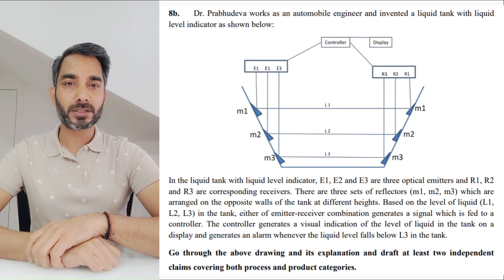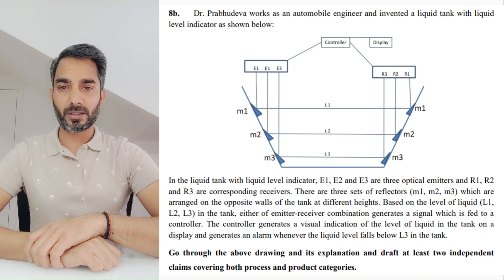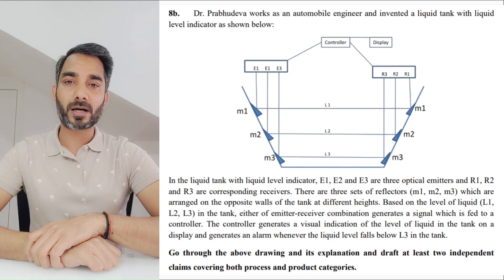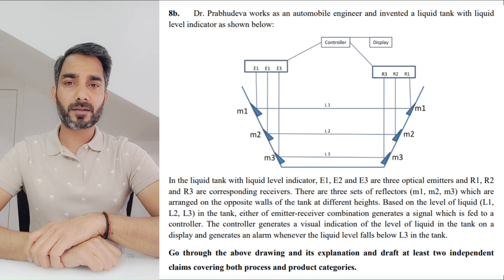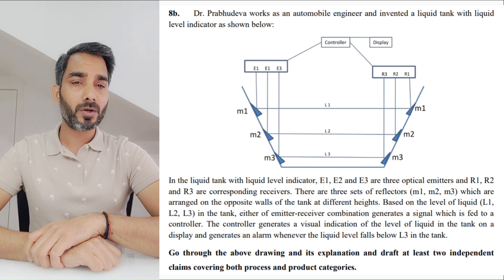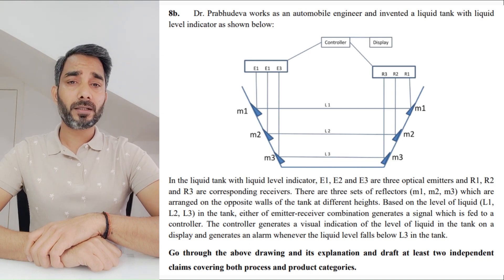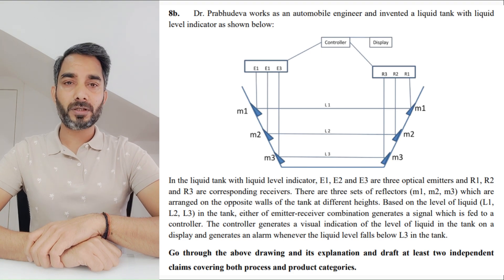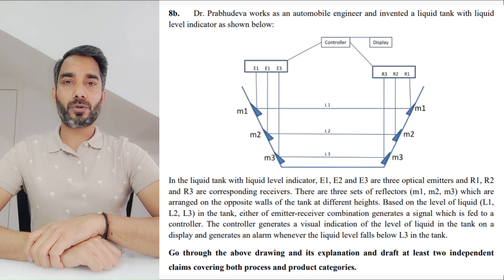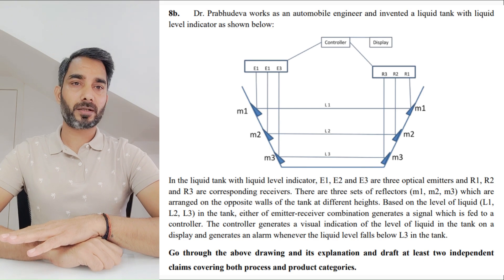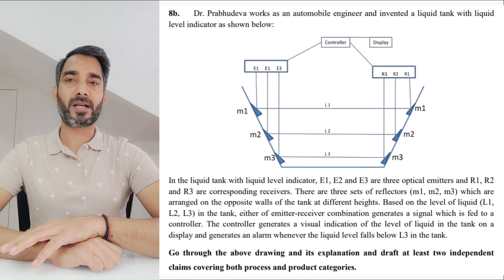Here is the first disclosure provided to us. Dr. Prabhu Deva has invented a liquid tank with liquid level indicator as shown. Various components have been marked: there is a liquid tank, liquid indicators, E1, E2, E3 are the emitters, R1, R2, R3 are the receivers, and there are reflectors. Basically, when a ray is emitted from E1, it gets reflected by M1, again reflected by M1, and received by R1. The controller receives the signal from R1 and displays the level L1. They have also provided that when the level goes below L3, there is an alarm which notifies the user. So we have a system or method for measuring the liquid level in a tank.